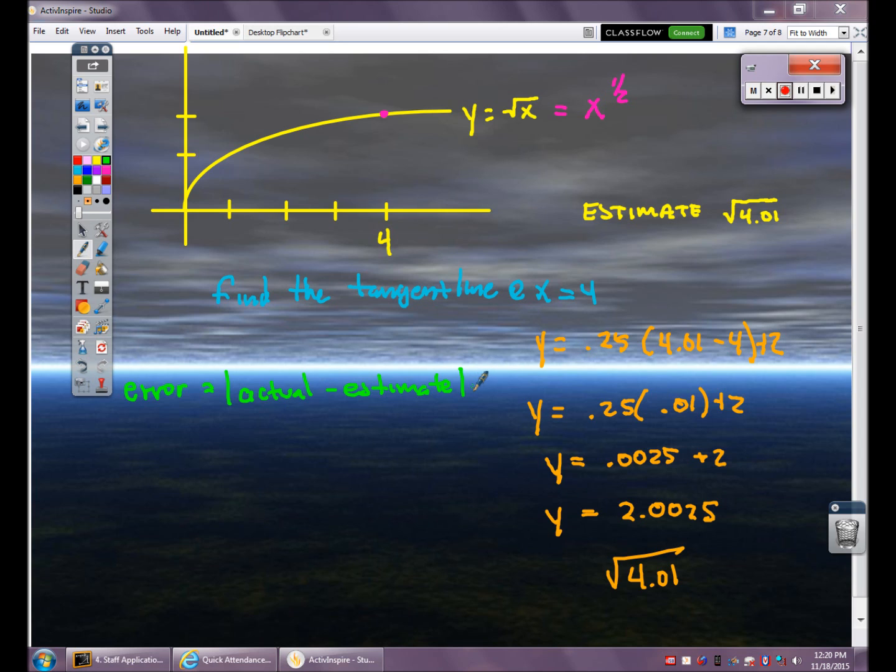Now error, how far am I actually off here? Error is defined as the absolute value of the actual answer minus the estimate. So if I took a calculator, the actual square root of 4.01 is 2.002498. If I subtract my estimate, 2.0025, I'll get an answer of 0.000002. That's pretty darn close. That means I'm really, really close to the actual answer.